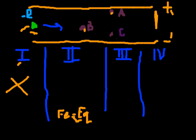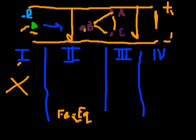Statement two says the work done from A to B to C is the same as the work done from A to C. That's true, because the work done by the electric field depends on the distance parallel to the electric field. Moving from A to B, the distance parallel to the electric field plus the parallel distance from B to C equals the same total parallel distance as going directly from A to C. So statement two is correct.